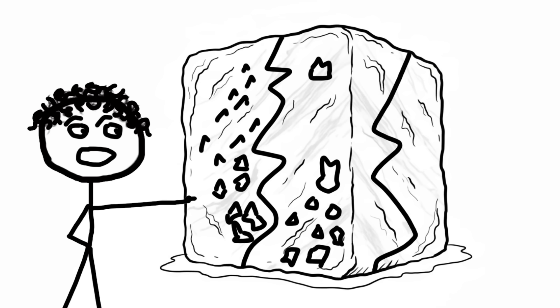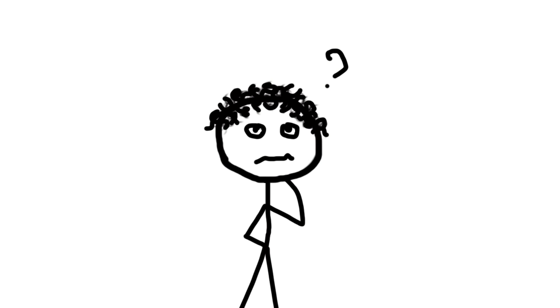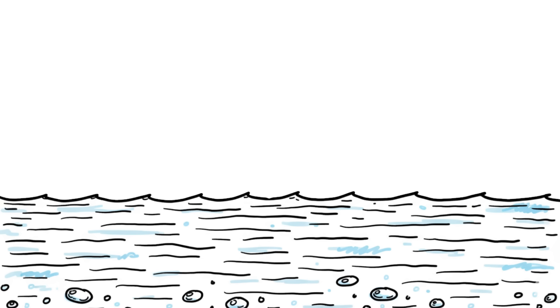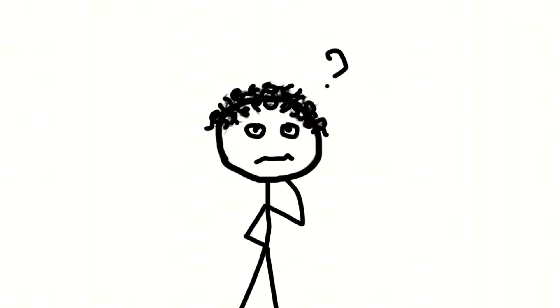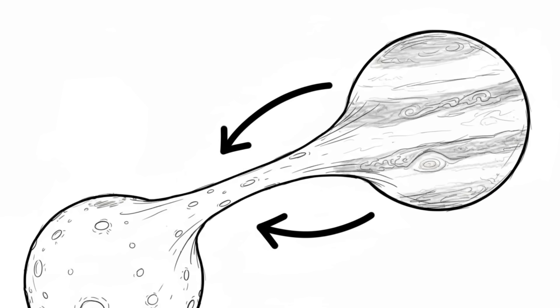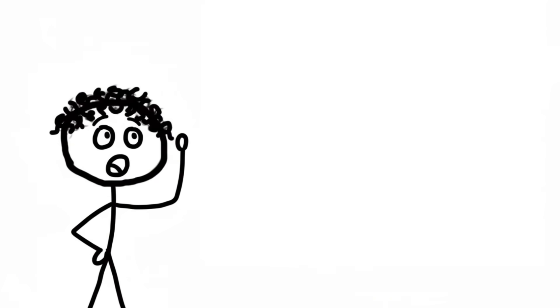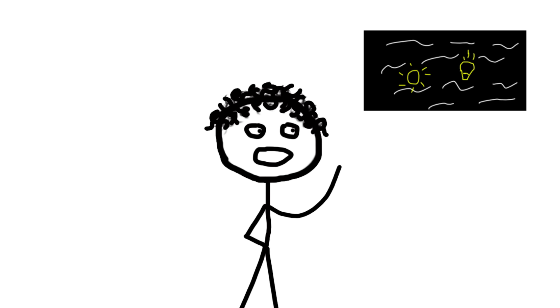The truly unsettling part is what's underneath: an ocean of liquid salt water, potentially deeper than all of Earth's oceans combined. What keeps it warm? You guessed it—Jupiter's intense tidal forces are flexing the moon like a stress ball, generating heat.